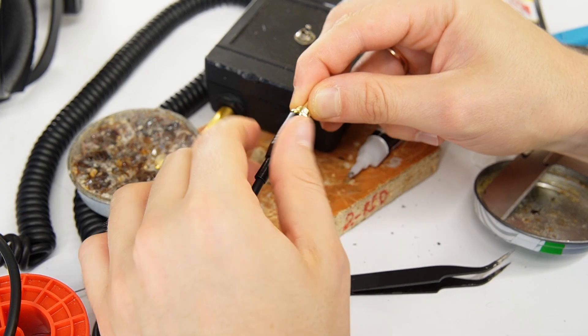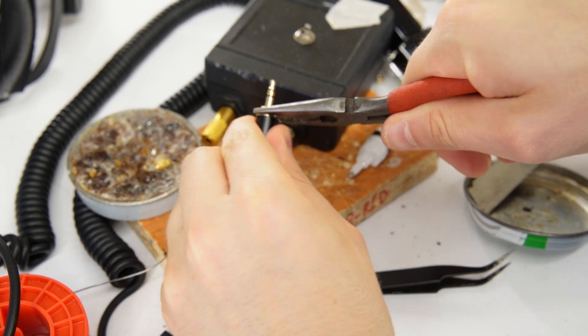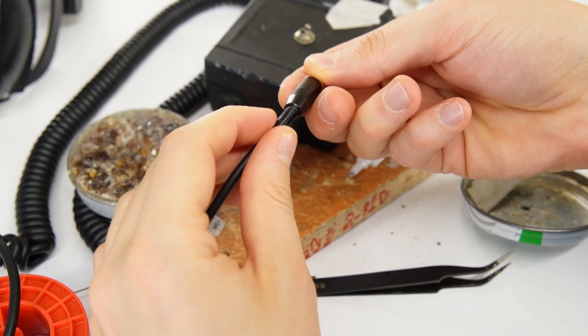Add a bit more superglue, then tighten the jack housing securely. And congratulations! Your headphones are repaired!